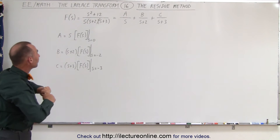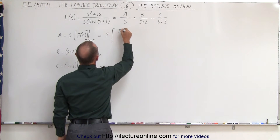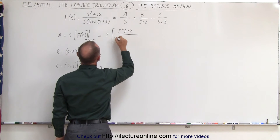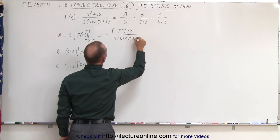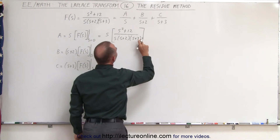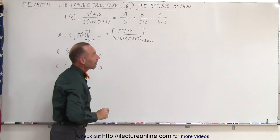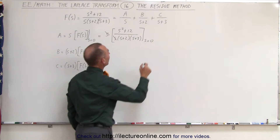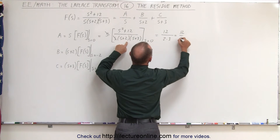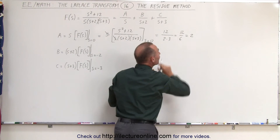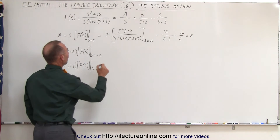When we do that, in the first case we end up with s times (s squared plus 12) divided by s times s plus 2 times s plus 3, evaluated at s equals zero. Notice that the two s's cancel out. Now letting every s go to zero, we get 12 divided by 2 times 3, which is 12 divided by 6, which is equal to 2. Notice that's the same value we got for A in the previous example.